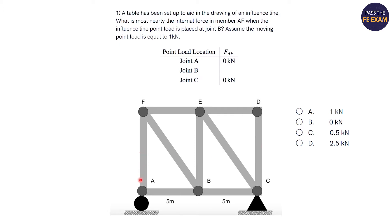When the load is at joint A, the force in AF is zero kilonewtons. When the point load is at joint C, the force in member AF is zero kilonewtons. They're telling you this. They want to know that when you put the one kilonewton point load at joint B, then what's the force in AF? And they give you some options here to the right.